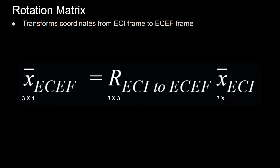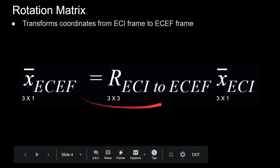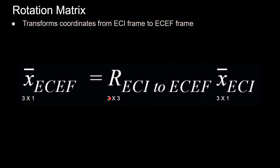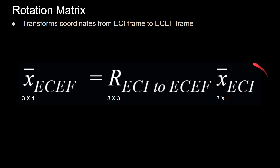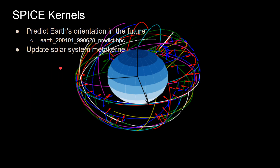The rotation matrix from spice.pxform takes you from ECI to Earth-centered Earth-fixed. You perform matrix-vector multiplication with your inertial frame vector, and that gives you the Earth-centered Earth-fixed vector that you need.